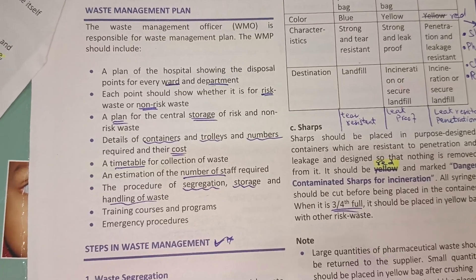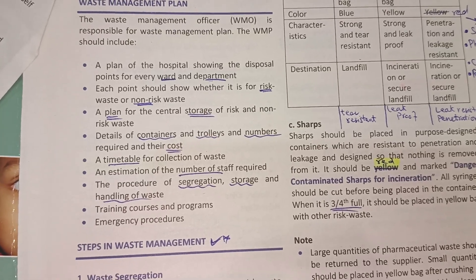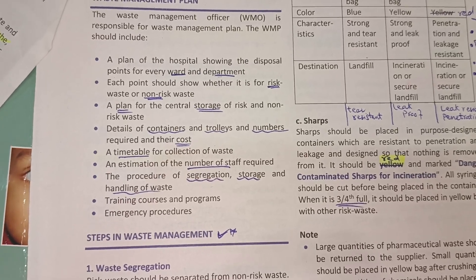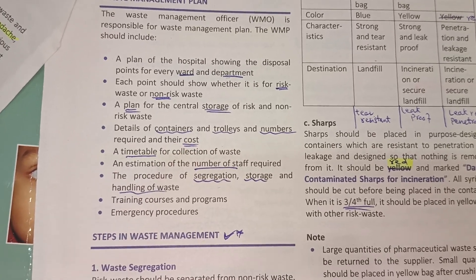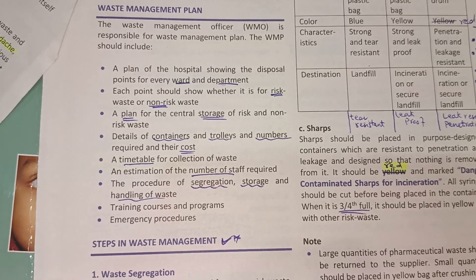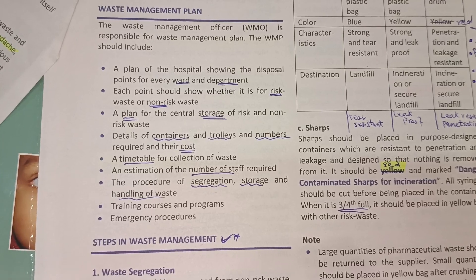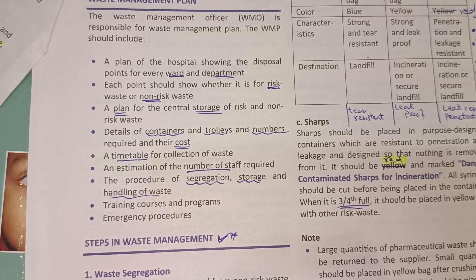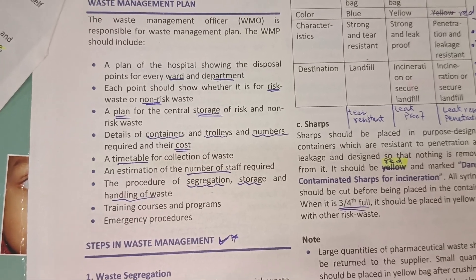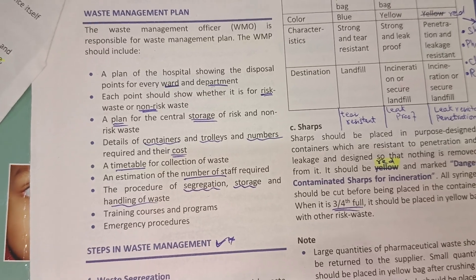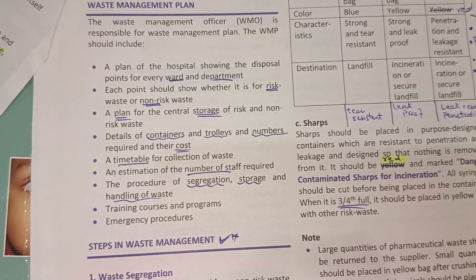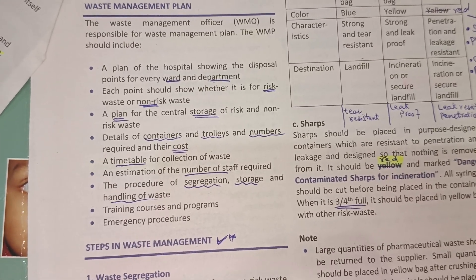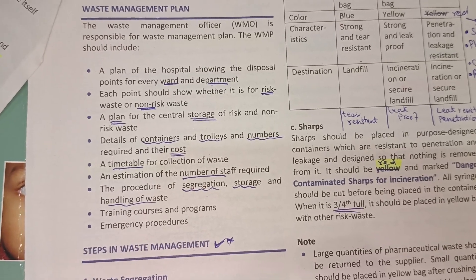The team determines collection times — for example, waste may be collected at 5 AM. In emergency situations, if a waste basket overflows, emergency removal is needed, so emergency staff must be kept on standby. The plan also covers segregation of risk waste, non-risk waste, and sharps, as well as storage, handling, training, and emergency procedures.